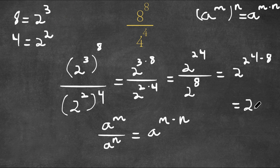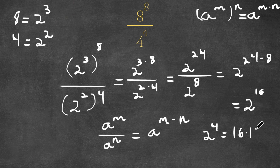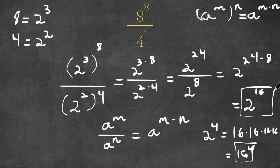So this would be 2 to the power of 16. Now, 2 to the power of 4, as we all know, is equal to 16. So 2 to the power of 16 would simply be 2 to the power of 4 to the power of 4, which means 2 to the power of 16 equals 16 times 16 times 16 times 16. This also equals 16 to the power of 4. So these two are the same answer, just in different forms.